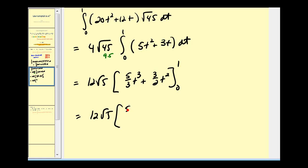So when t is one, we'll have five-thirds plus three-halves. When t is zero, these are both zero. Common denominator here would be six.